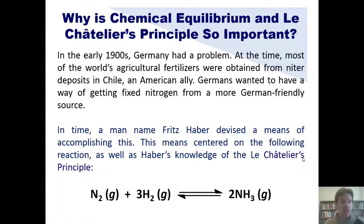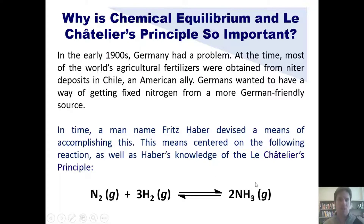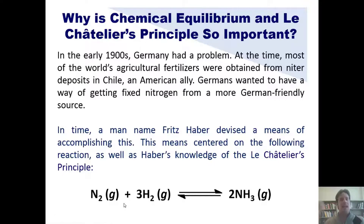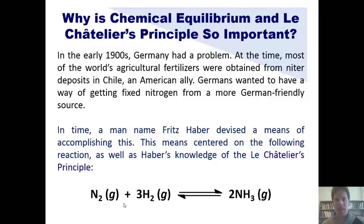Haber understood Le Chatelier's principle: if you could remove NH3 from the system, the equilibrium would shift to fill that gap by producing more NH3. If you removed more NH3, the reaction would shift further to produce even more. By doing this repeatedly, you could effectively make the reaction behave as if it were completely one-way — converting reactants almost entirely to product and yielding a large amount of NH3.